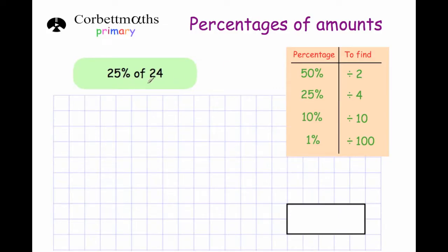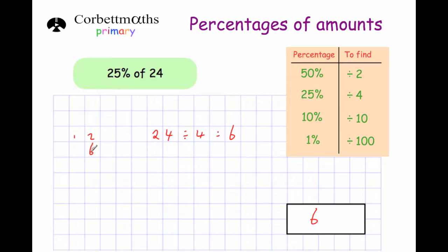Next: 25% of 24. To get 25% you divide by 4, so 24 divided by 4 is 6. Another way is to halve 24 to get 12, and halve it again to get 6, since 25% is a quarter. Halving twice is quite a useful mental technique.